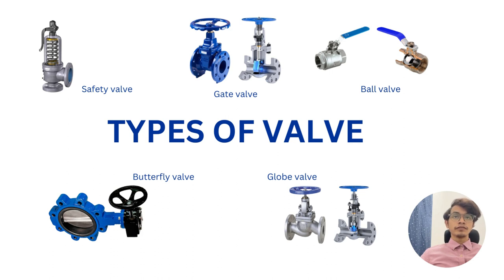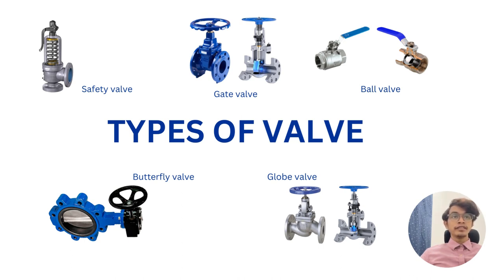Next is the butterfly valve. The butterfly valve is a rotary motion valve with a quarter turn, from 0 degrees to 90 degrees. When fully open, the disc is parallel to the piping and extends into the pipe. The main disadvantage of using a butterfly valve is its high pressure recovery, so its service is limited to low pressure drop applications.